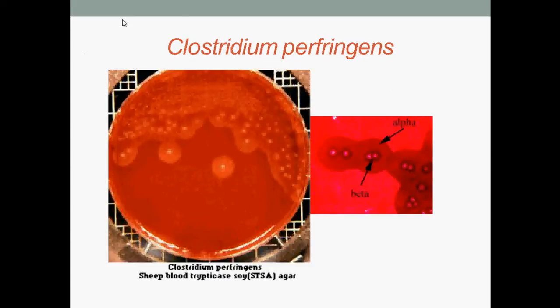Here we have Clostridium perfringens growing on sheep blood trypticase soy agar. Here we can see the double zone of hemolysis: the inner zone is a zone of beta hemolysis, which is the complete hemolysis of blood, and the larger zone circumvallating the inner beta zone is the alpha zone, representing partial hemolysis of blood.